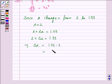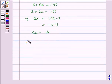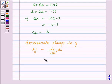which is equal to minus 0.01 and delta x is dx. Now the approximate change in y is given by dy which is dy/dx into dx. Now dy/dx is 4x cubed into dx is minus 0.01.